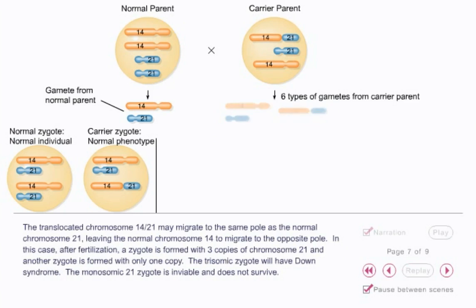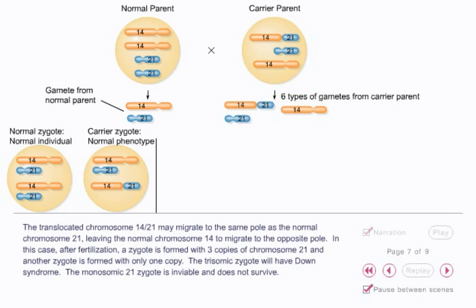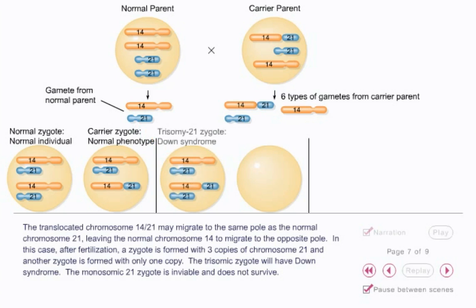The translocated chromosome 14-21 may migrate to the same pole as the normal chromosome 21, leaving the normal chromosome 14 to migrate to the opposite pole. In this case, after fertilization, a zygote is formed with three copies of chromosome 21 and another zygote is formed with only one copy. The trisomic zygote will have Down syndrome. The monosomic 21 zygote is inviable and does not survive.